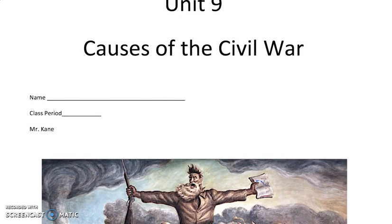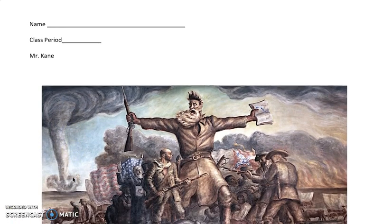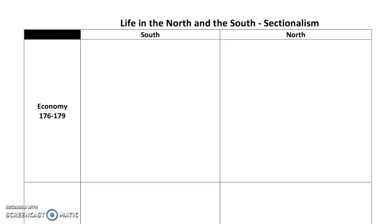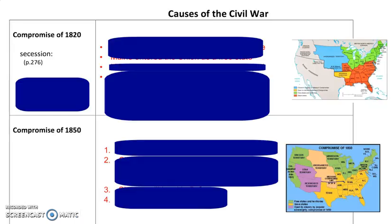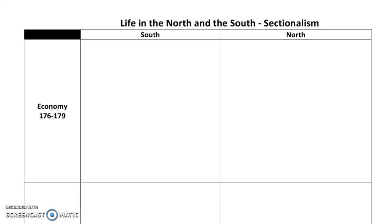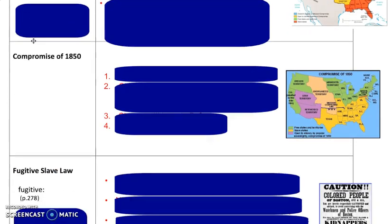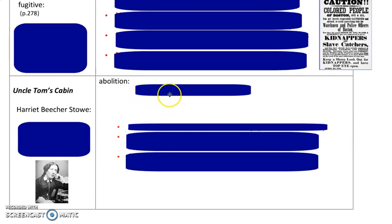We're going to take a few notes in your Unit 9, Causes of the Civil War booklet. We've already taken a few notes, so I'm just going to skip ahead. We've already completed the Life in the North and South Sectionalism Graphic Organizer. We talked about the Compromise of 1820, Compromise of 1850, and the Fugitive Slave Law. So we need to just finish up with Uncle Tom's Cabin.